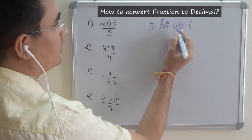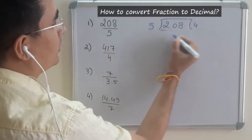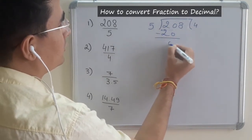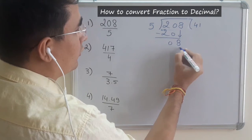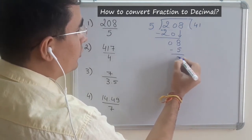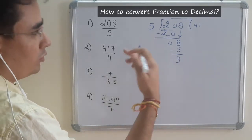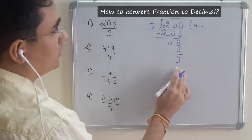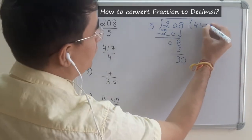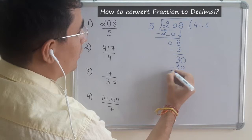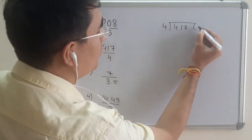The first part is easy. Since 2 is not divisible by 5, we take both digits: 20. So it's 4 times 5 is 20, subtract to get 0, bring down 8. Now 8 divided by 5 — 5 times 1 is 5, so remainder is 3. Since 3 is not divisible by 5, to divide further we put a decimal. We are allowed to use 10, so 5 times 6 is 30.